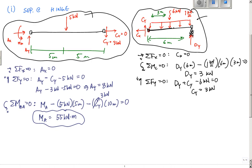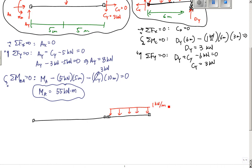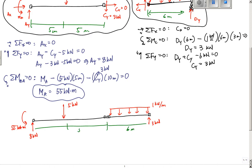Finally, I can redraw the entire structure. I'll redraw the entire structure like this, with the hinge included. To get ready to draw the shear and moment diagram, I set it up with 1 kilonewton per meter distributed load, AY equals 8 kilonewtons, DY equals 3 kilonewtons, and the moment at A equals 55 kilonewton meters. Don't forget the 5-kilonewton concentrated load. The lengths are 6 meters for CD and 5 and 5 meters for the AB and BC segments. This is how I set it up to draw the shear and moment diagrams, which I'll do in the next video.